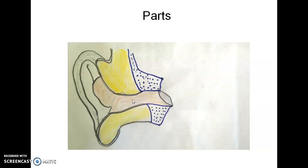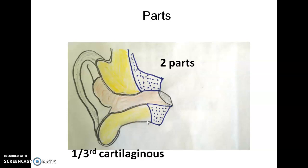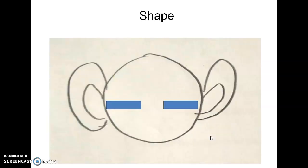Coming to the parts of the external auditory canal: most people say outer and inner part, but to be specific, the outer one-third is the cartilaginous part, and the inner two-thirds is the bony part. So there are two parts — outer one-third which is cartilaginous, and inner two-thirds which is bone.